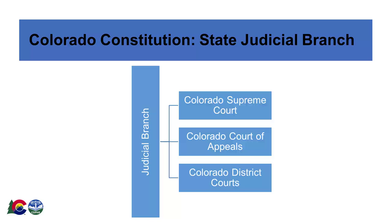Judges sitting in each of these state courts are appointed by the Governor, not elected, based on recommendations from a judicial district nominating commission at the trial court level, and a state nominating commission at the Court of Appeals and Supreme Court level. All appointed judges must stand for retention — they must be approved by voters after serving an initial two-year probationary term. Judges serve six-year terms at the district level, eight years for the Court of Appeals, and ten years for the Supreme Court.